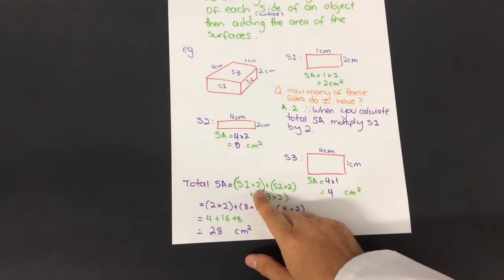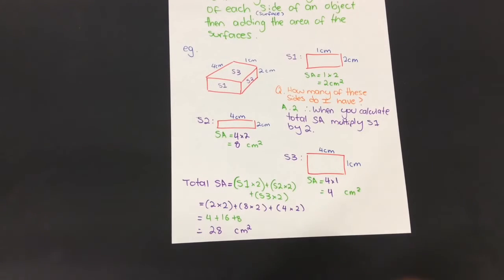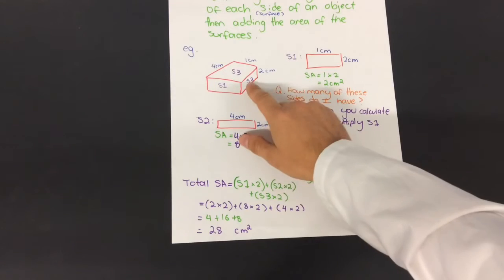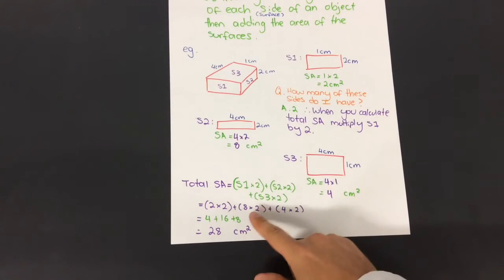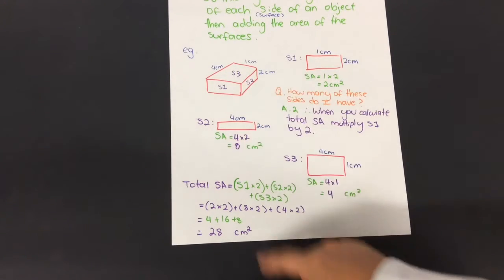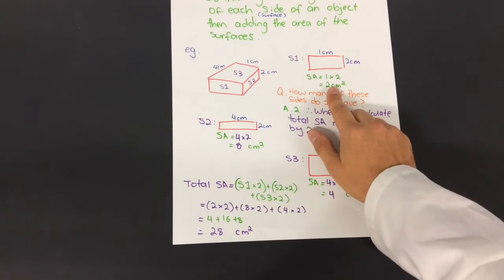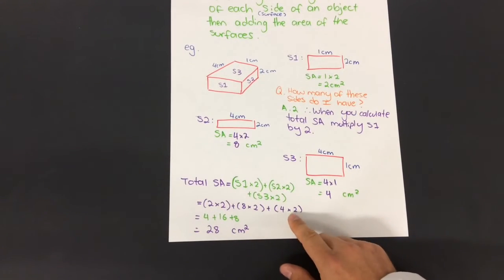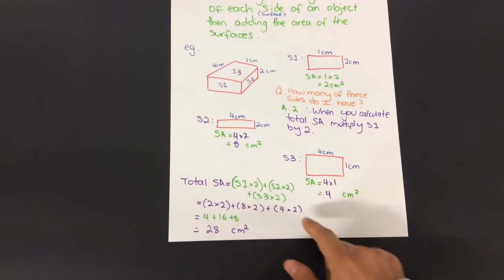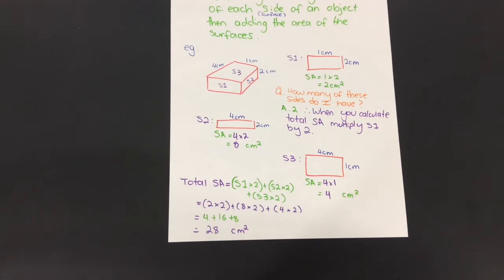I've got two of those surfaces, so I need to multiply it by two. I add that to the surface area of side two, so I multiply that by two because I got two of them, and then I add that to surface area three, and I've got two of them also. That looks like this: two by two, eight by two, and four by two. Add all of those together gives you four, add 16, add eight, which gives me 28 centimeters squared.